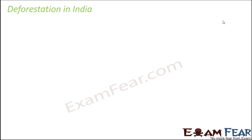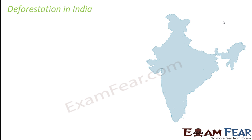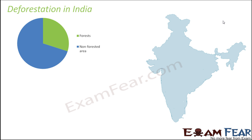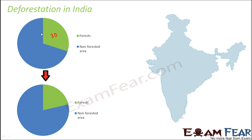To see how fast deforestation is taking place, let's take the example of India. In earlier days, forests covered a good portion of the entire land — about 30 percent was covered by forest, represented here by the green area. But over a span of 10 to 20 years, the amount of forest has reduced significantly, showing that forested land is decreasing with each passing day.